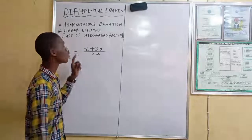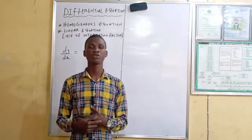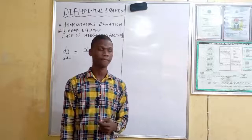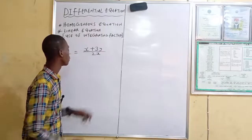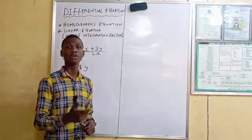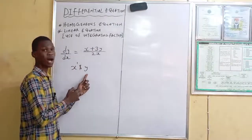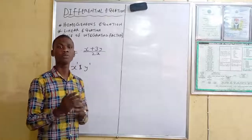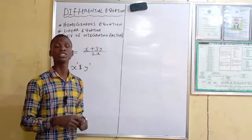For the first one — homogeneous equation — what are the features? Whenever you are given a differential equation, how do you know to use the homogeneous method? The first task is to identify the variables involved. Here the variables are x and y. Check the power of each variable: the power of x is 1 and the power of y is also 1, meaning they have the same power. When variables in a differential equation have the same power, you use the homogeneous equation method.